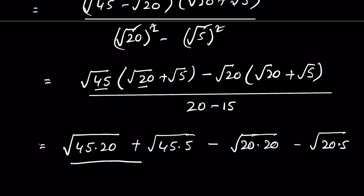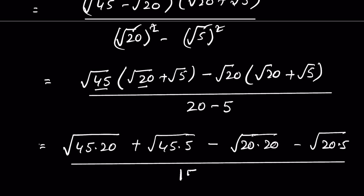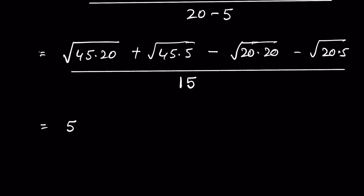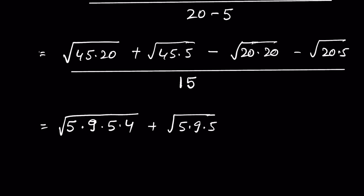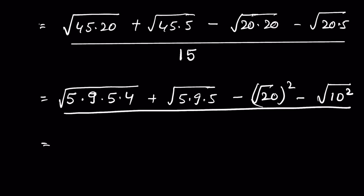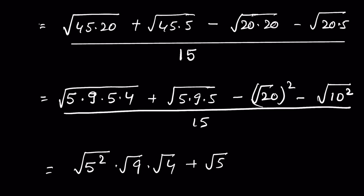The denominator is 20 minus 5, which is 15. Now we simplify each term: 45 times 20 — write 45 as 5 times 9 and 20 as 5 times 4 under square root. Then 45 times 5 under square root; square root of 20 times 20 is square root of 20 squared, which equals 20; and 20 times 5 is 100, which we can write as 10 squared. So we have square root of 5 squared times square root of 9 times square root of 4, plus square root of 5 squared times square root of 9, minus 20, minus 10, upon 15.